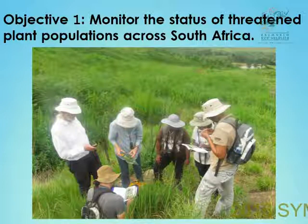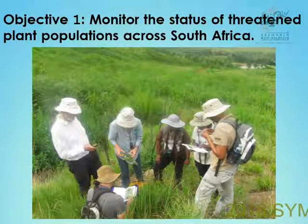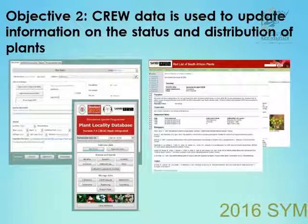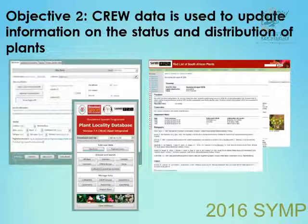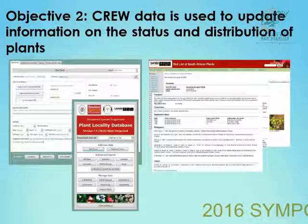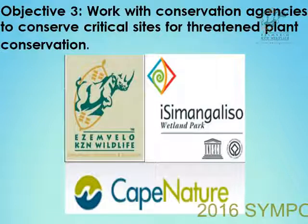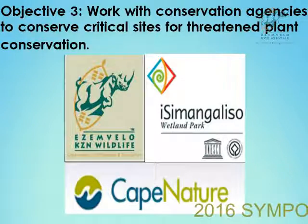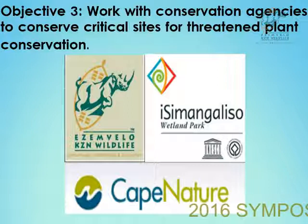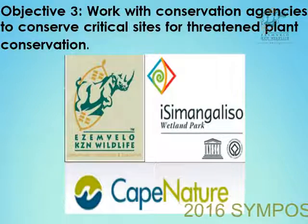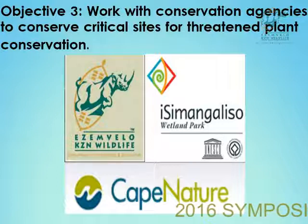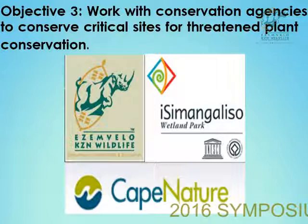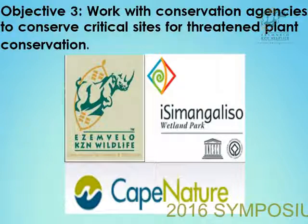The second objective is to collate CRU data, which is used to update information on the status and distribution of plants. This data feeds into the red list, as Savannah mentioned. We get our data from iSpot. The third objective is that we work closely with conservation agencies to conserve critical sites for threatened plant conservation. We have data sharing agreements with many conservation agencies, and so the data collected by CRU is not only used by Sanbi — it's used externally as well.